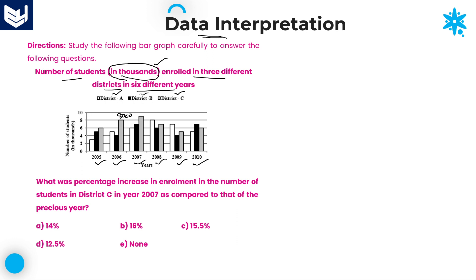If you look at the graph, the scale goes 0 to 2, then 2 to 4, with a gap of 2 each time. In case values are not explicitly marked, if the bar exactly touches a line, take that value directly. If it falls between two lines, take the midpoint. For example, if the bar is between 8 and 6, take the value as 7 — that is 7,000.